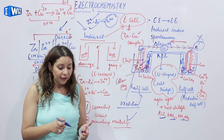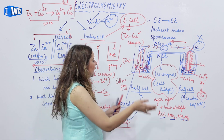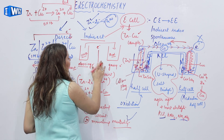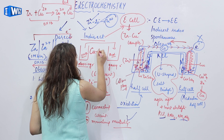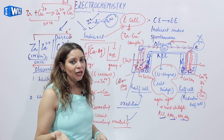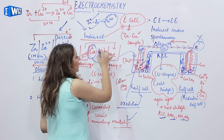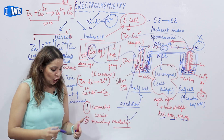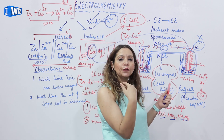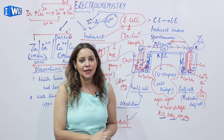Similarly, if you take copper and silver as the couple, since copper has more tendency to lose electrons than silver, copper would be in the oxidation half cell and silver in the reduction half cell. In this way, we decide which metal goes in which beaker. This is all about the electrochemical cell.